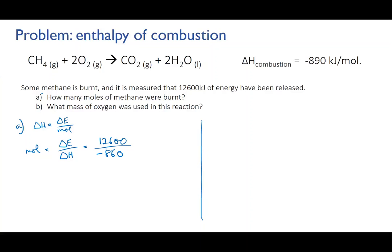And then we pause for a second. If we divide a positive number by a negative number, we're going to get a negative number. And I'm not looking for a negative number of moles. That would be weird. So what have we done wrong?